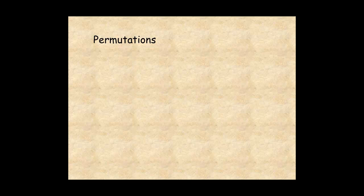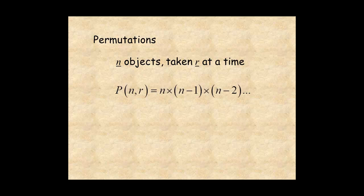In general, the number of permutations of n objects taken r at a time is given by this formula, where n minus 1 is the next smaller number after n, n minus 2 is the second smallest number, and so on, for r number of factors.